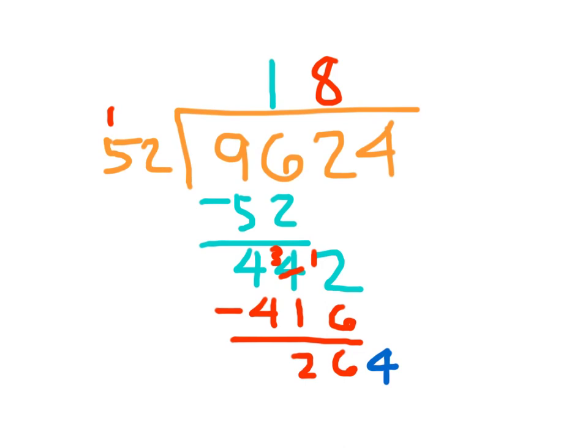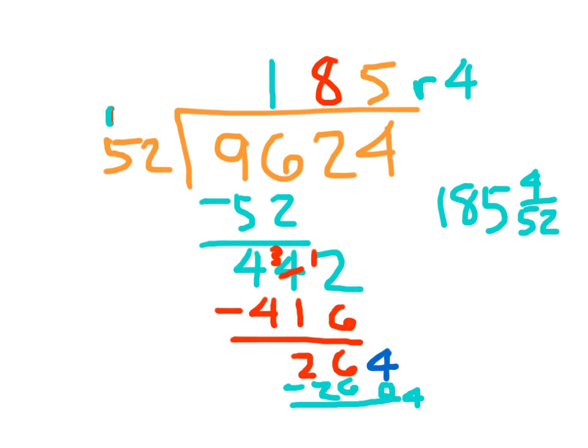Finally, I bring down the 4. How many times can 50 go into 264? I'd say 5 times. 5 times 2 is 10, regroup the 1. 5 times 5 is 25, plus 1 is 26. Good. I chose a good number. 264 minus 260 is 4. So my remainder is 4. Or I could express it as 185 and 4 52nds. That would simplify down to 185 and 1 13th.